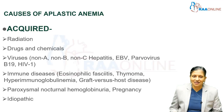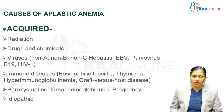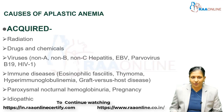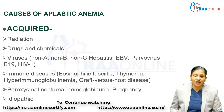Immunological diseases can lead to acquired aplastic anemia, including eosinophilic fasciitis, thymomas, hyperimmunoglobulinemia, and graft-versus-host disease. Paroxysmal nocturnal hemoglobinuria of pregnancy can also lead to aplastic anemia, and there can be idiopathic acquired aplastic anemia.